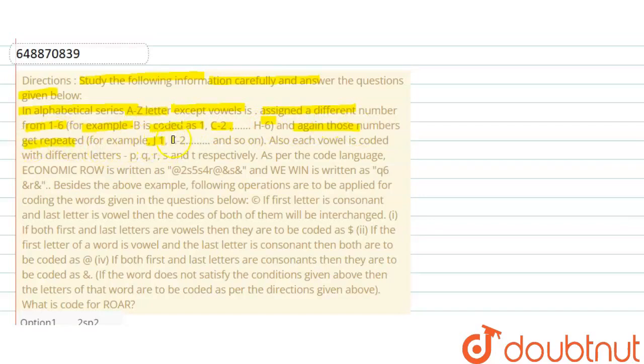For example, J is coded 1, K is coded 2 and so on. Also, each vowel is coded with different letters P, Q, R, S and T respectively. As per the code language, economic row is written as this code and vwin is written as this code. Besides the above example,